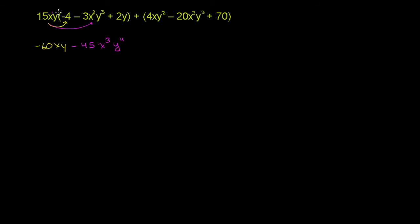You could view this as x to the first times y to the first. So we did that. Then we have 15xy times 2y. 15 times 2 is 30. And then x, there's nothing to multiply the x by, so we just keep leaving the x there. And then y times y is y squared. So we've done that.